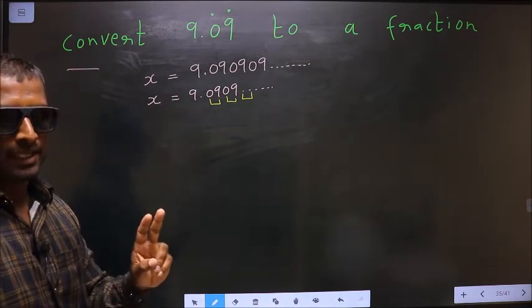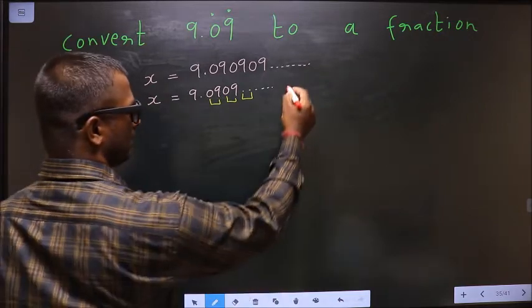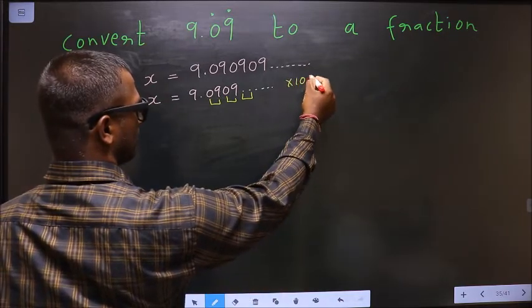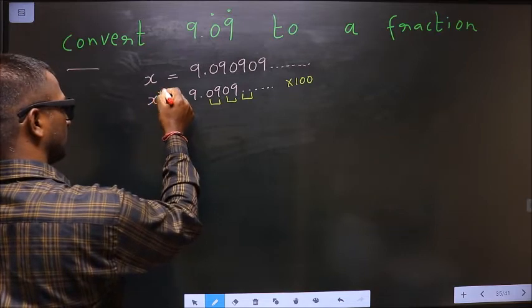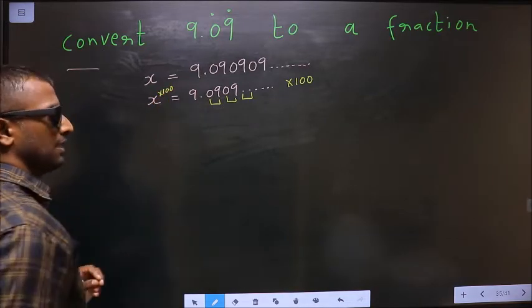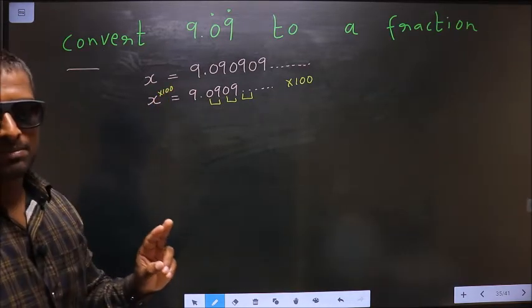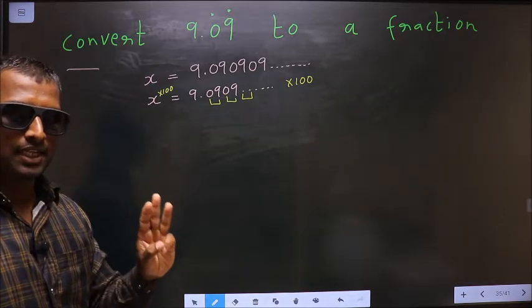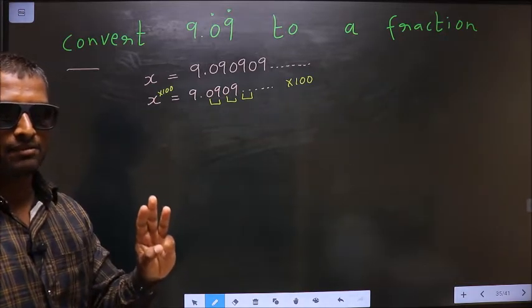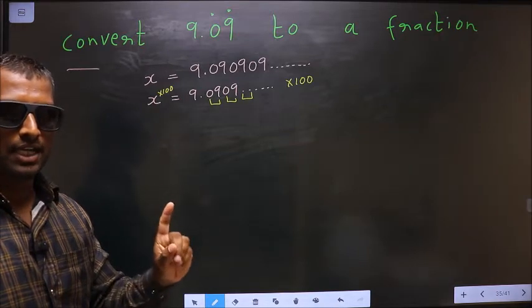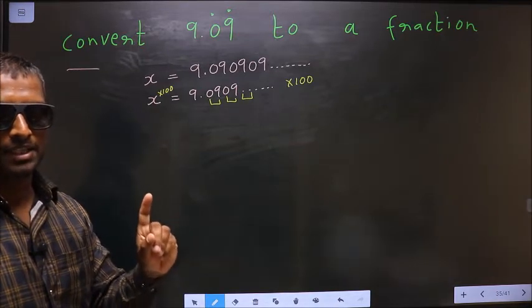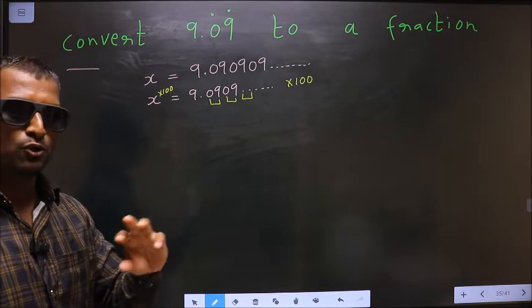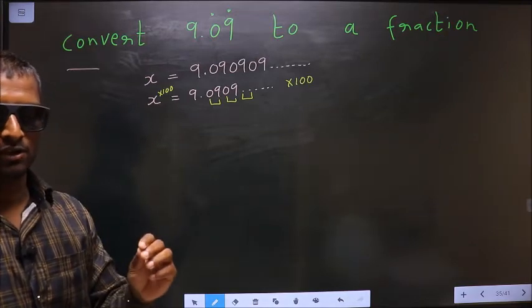So whenever 2 numbers are being repeated, multiply with 100 on both sides. See, whenever 2 numbers are being repeated, multiply with 100. Had it been 3 numbers being repeated, multiply with 1000. Had it been 1 number being repeated, multiply with 10. It is a rule.